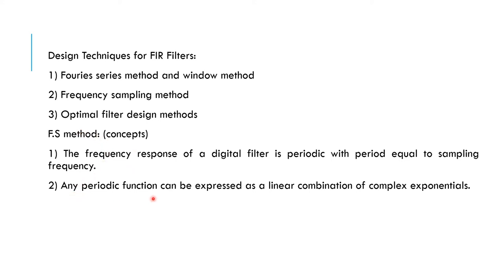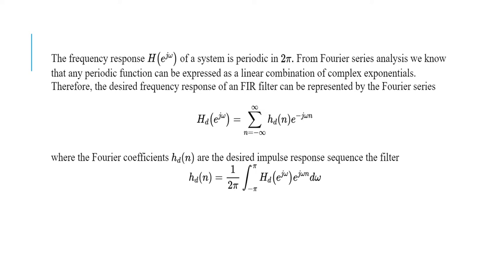Any periodic function can be expressed as a linear combination of complex exponentials. The frequency response H(e^jω) of a system is periodic in 2π. From Fourier series analysis, the desired frequency response of an FIR filter can be represented as: hd(e^jω) = summation from n = −∞ to ∞ of hd(n) · e^(−jωn). This is the usual Fourier series representation.